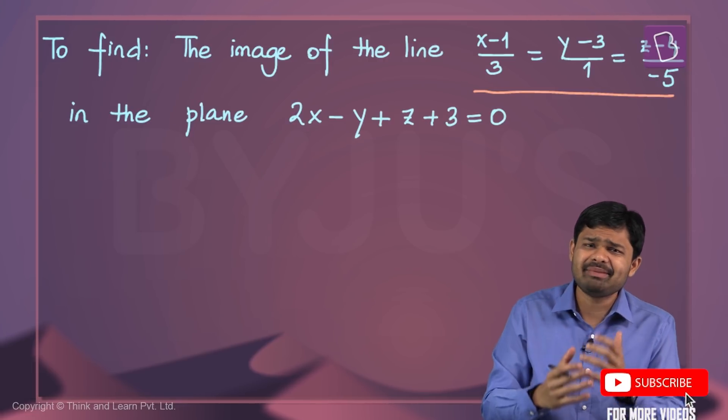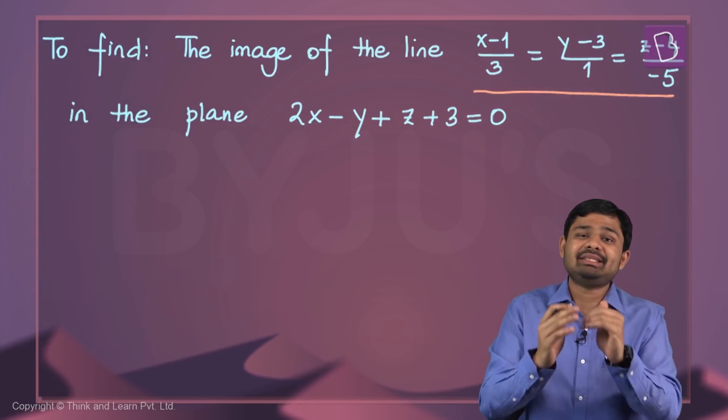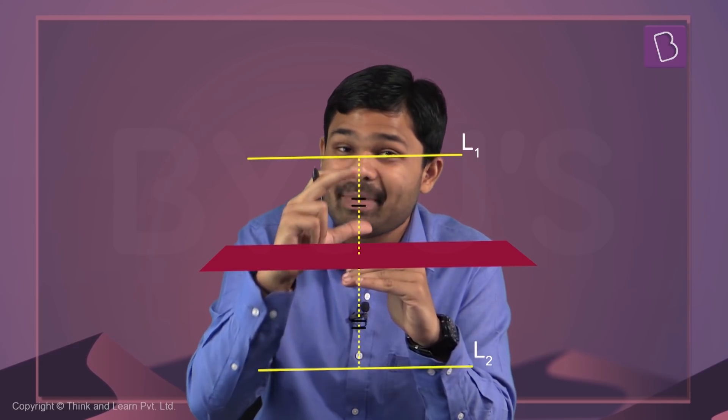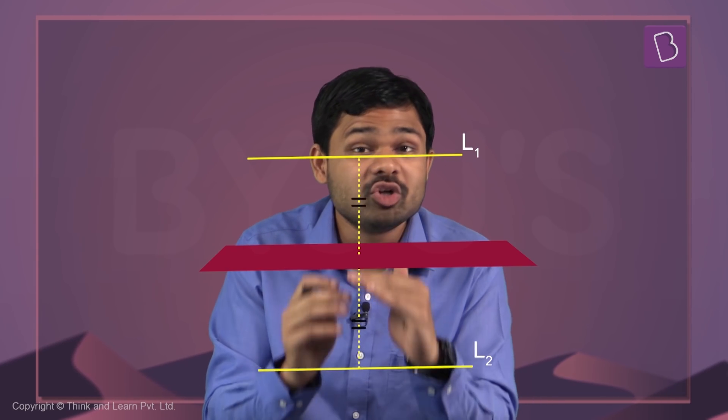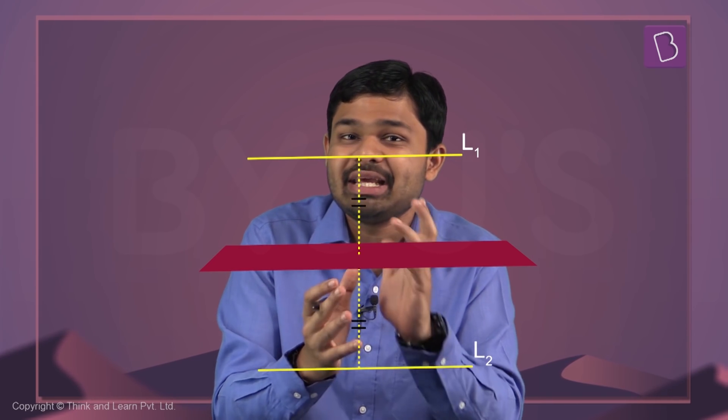Now why is the statement of this problem a little convoluted? Whenever it's an image problem, this is the image that should come into your head: we have a plane, we have a line, and its image is this one. We're not finding a line which lies on the plane — instead, we consider the plane as a mirror. The image is formed at an equal distance on both sides of the plane. We do not have to find the line which lies on the plane.